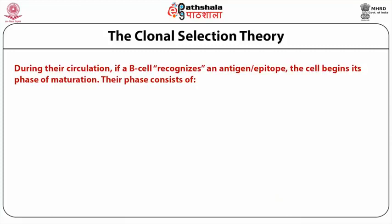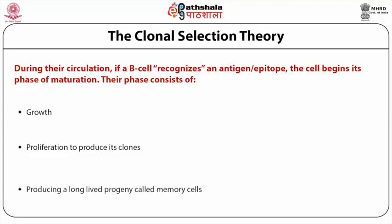New cells are meanwhile being released by the bone marrow all the time. During their circulation, if a B cell recognizes an antigen or epitope, the cell begins different phases of maturation consisting of growth, proliferation to produce clones, and then producing a long-lived progeny called memory cells. This pre-existing population is one mechanism responsible for generation of antibody diversity. This component of diversity is genetic in nature, defined by existing genes naturally present in the organism. There is another component which is somatic in nature.